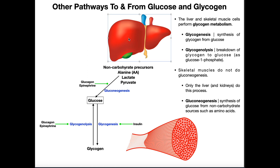Gluconeogenesis is a pathway mostly carried out by the liver — it can occur in the kidneys, but the liver is the main thing that does this. What gluconeogenesis does is it takes different molecules around the cell: alanine, which is an amino acid; lactic acid or lactate, a byproduct of metabolism; and pyruvate, the end product of glycolysis. These are non-carbohydrate sources of energy. The liver can transform these molecules into glucose — taking alanine, lactic acid, or pyruvate and converting each into glucose. This process is gluconeogenesis: taking non-carbohydrate precursors and making new glucose.